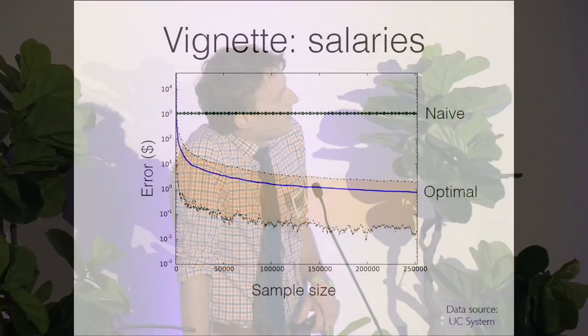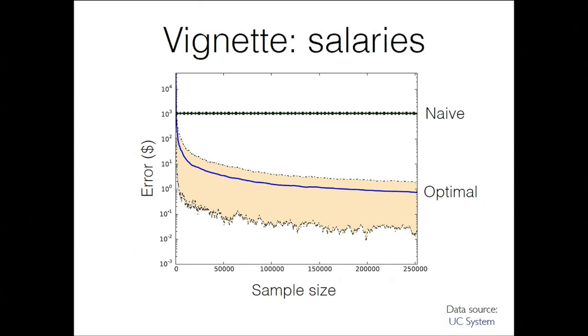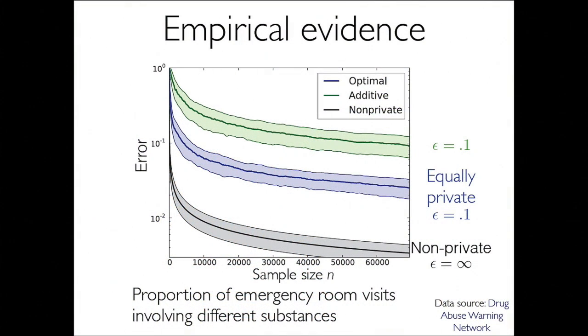Here, what I'm showing is we're trying to estimate the average salary of faculty and students in the University of California system. This data is public, so it's a proof of concept. The naive strategy leaves you off by about $1,000 in the average salary even with a sample of everyone in the UC system. The right way is to go person by person and ask, is your salary higher or lower than this number? You let them flip a coin and they can lie sometimes, but you get the error to within about $1. We can also do this with drug use, where we collected real data, and the optimal procedures are better.